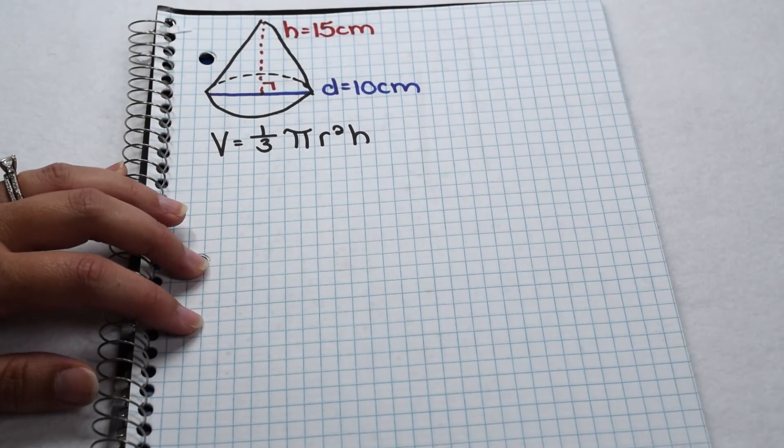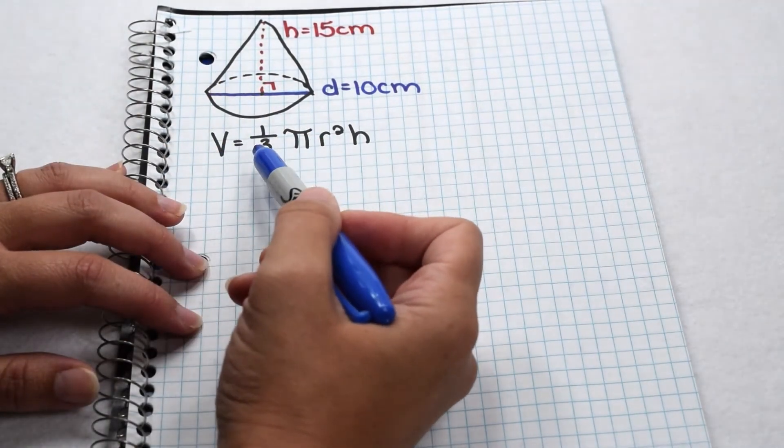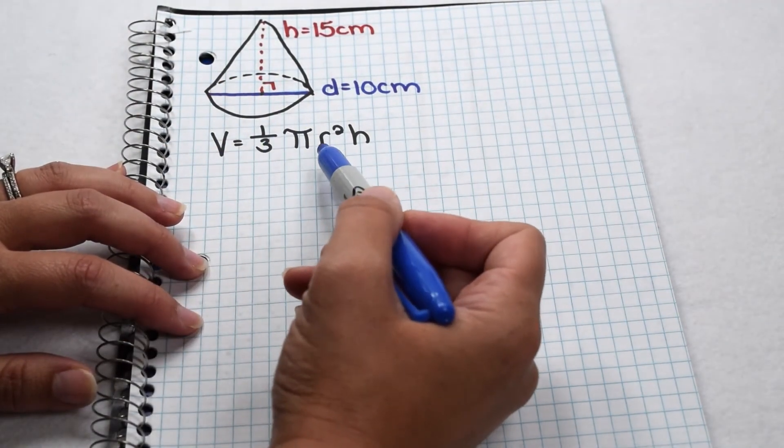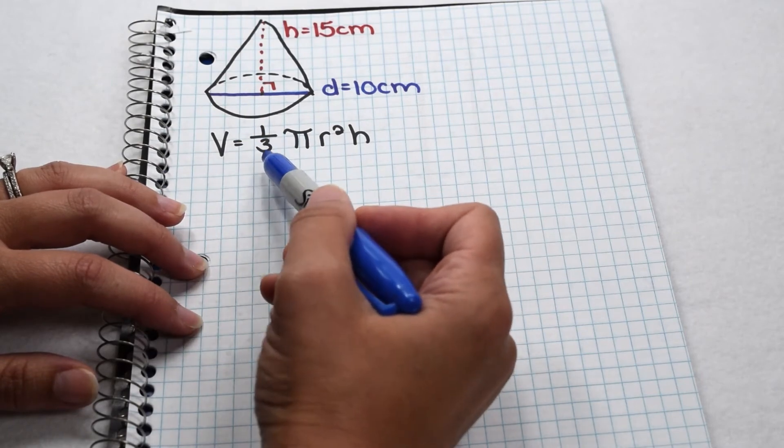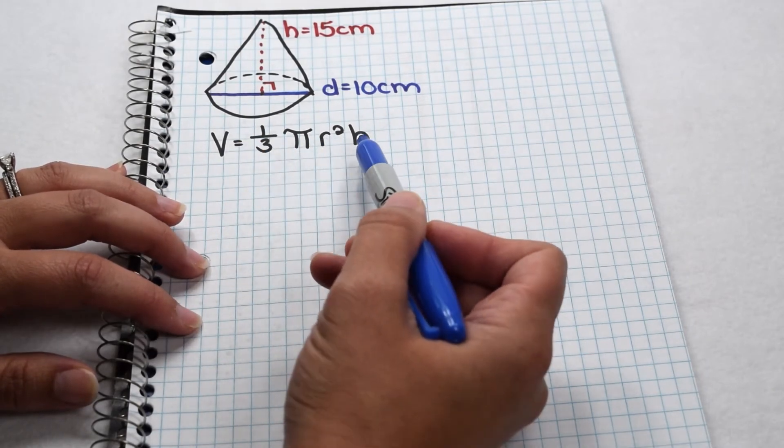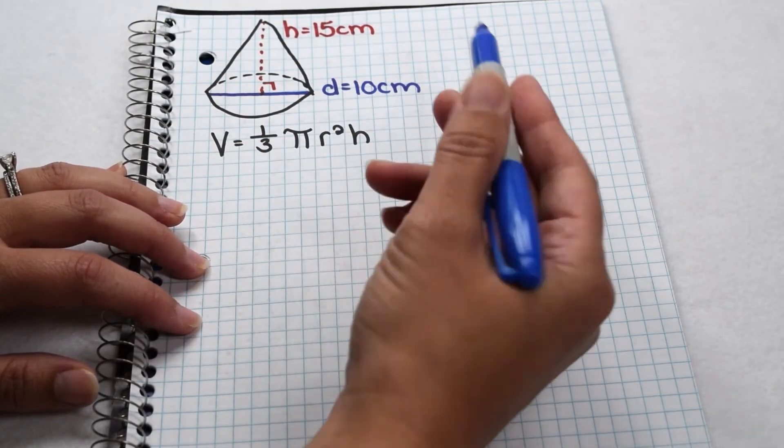Let's use our equation to go ahead and find the volume of our cone. We found the volume of the cone is one-third the volume of the corresponding cylinder with the same dimensions. Our volume is one-third times pi times radius squared times height.